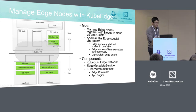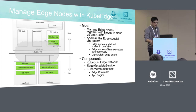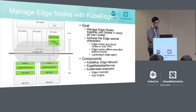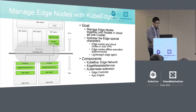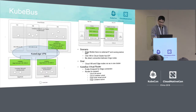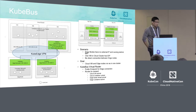First, we link edge nodes and cloud nodes in one VPN, solving the NAT issue. Second, we provide offline execution autonomy to handle the offline scenario. Third, we provide a lightweight agent so we don't require much memory. We have three components to do this work: CoolBus handles the edge network; the edge metadata service handles offline data processing; and the Kubernetes extension splits Kubernetes into an edge controller and an app engine.